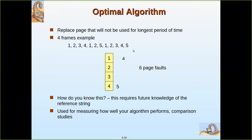We look ahead in the reference string to see which page is not going to be used immediately. We check the next references: 1, 2, 3 are going to be referred immediately next, and only after those is 4 referred. So you can replace page 4 because its next reference comes after all the others. So we remove page 4 and replace it with page 5.